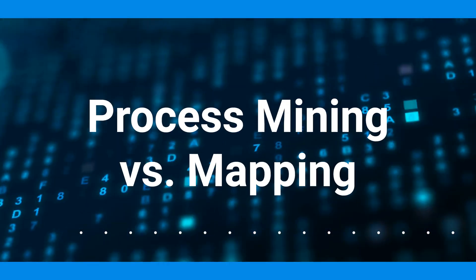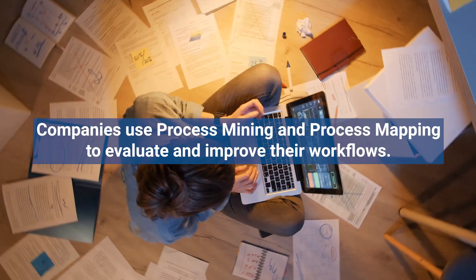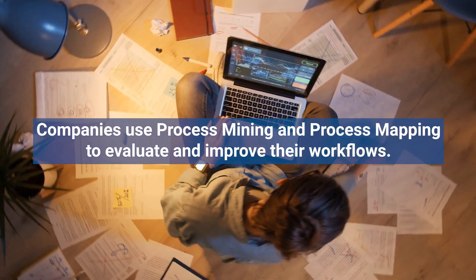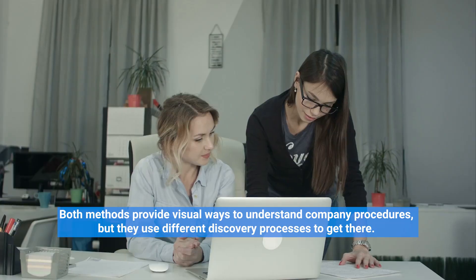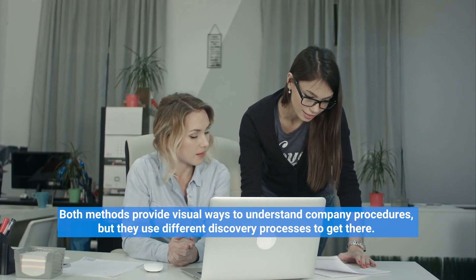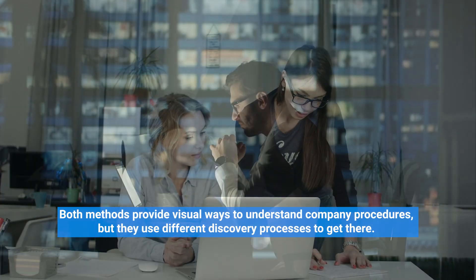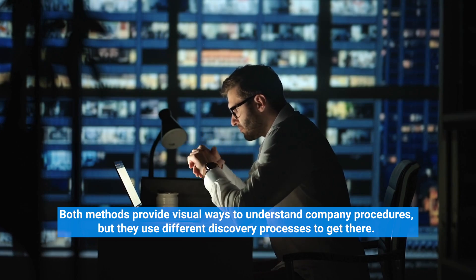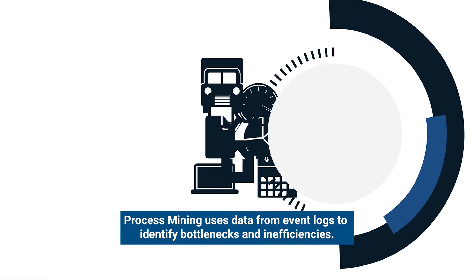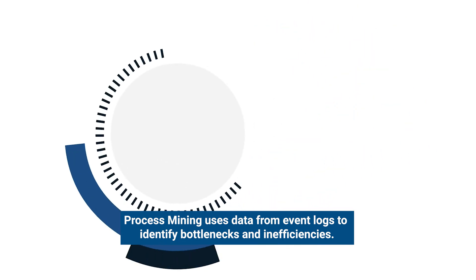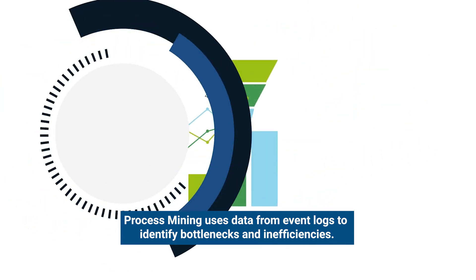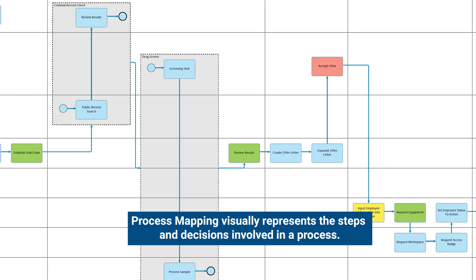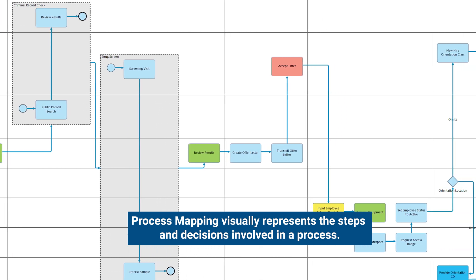Process Mining versus Mapping. Companies use process mining and process mapping to evaluate and improve their workflows. Both methods provide visual ways to understand company procedures, but they use different discovery processes to get there. For example, process mining uses data from event logs to identify bottlenecks and inefficiencies, while process mapping visually represents the steps and decisions involved in a process.